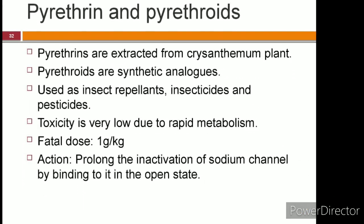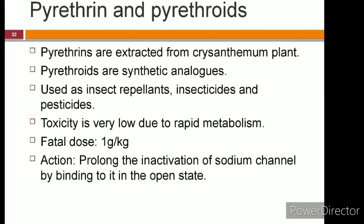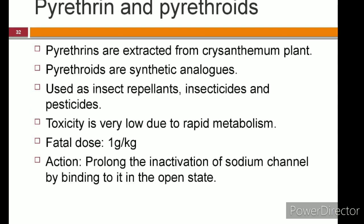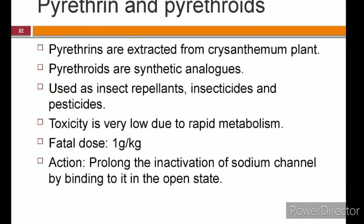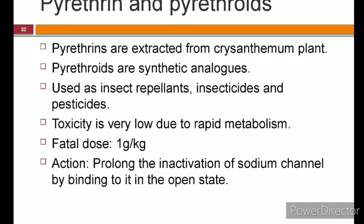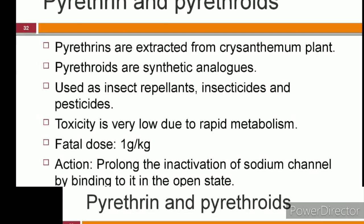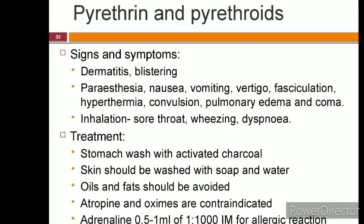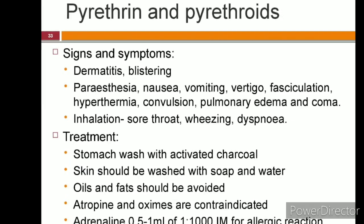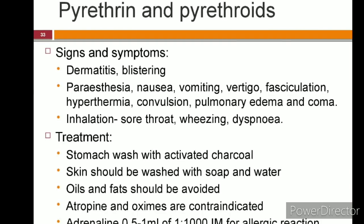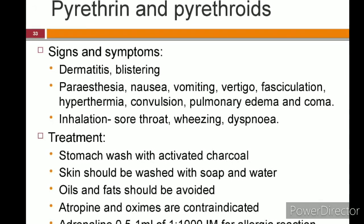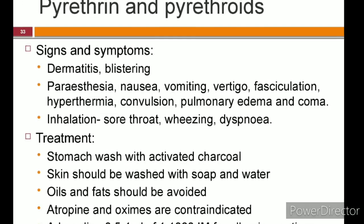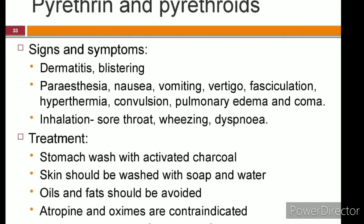Pyrethrins and their analogues are commonly used as oils and lotions to kill head lice, so accidental poisoning in children is common. However, they are less toxic due to rapid metabolism. The fatal dose is 1 gram per kilogram body weight. Patients may have symptoms of paresthesia, vertigo, muscle fasciculations, rarely convulsion, pulmonary edema, and coma. Treatment includes washing the skin thoroughly with soap and water and stomach wash. Atropine and oximes are contraindicated. In case of severe allergic reaction, injection adrenaline and antihistamine may be useful.